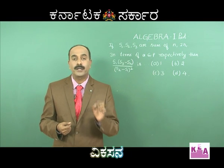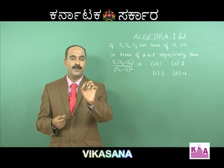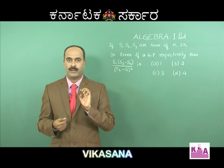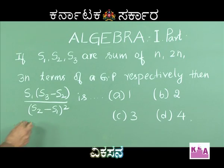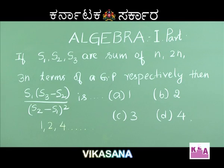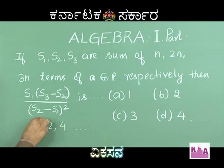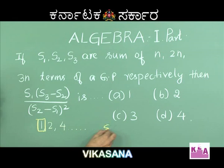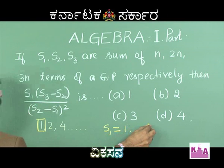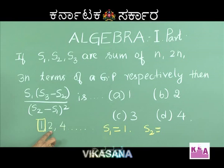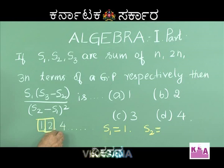This problem is based on geometric series. The simplest geometric sequence is 1, 2, 4 and so on. What is the sum of the first term? S2 is equal to 1 plus 2, that is equal to 3. S3 is 1 plus 2 plus 4, which equals 7.